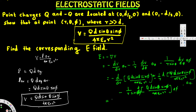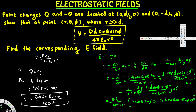After carrying out all the derivatives, the final electric field is: E = (qd / 4πε₀r³) · [2sinθ·sinφ·a_r + sinφ·cosθ·a_θ - cosφ·a_φ]. This is the final answer.